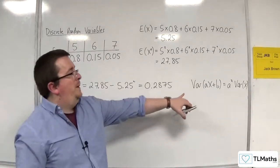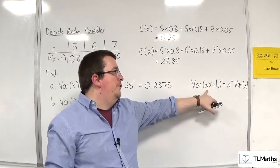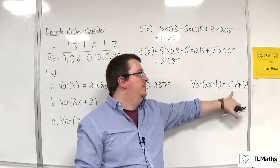So the plus b that you have there doesn't make any difference, so you can completely ignore that. And the coefficient of x gets squared.